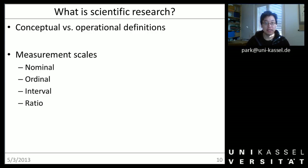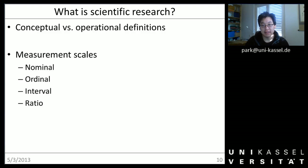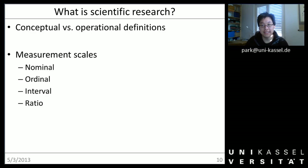When we have decided upon a conceptual and an operational definition of what we are trying to measure on the phenomenon, we still have to decide on the measurement scale. Why is that important? Because depending on what scale we use to measure a phenomenon, there are different things that we can do statistically with the data we get.